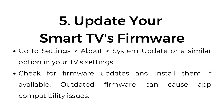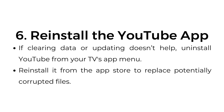Step 5: Update your smart TV's firmware. Go to Settings > About > System Update, or a similar option in your TV's settings. Check for firmware updates and install them if available. Outdated firmware can cause app compatibility issues.